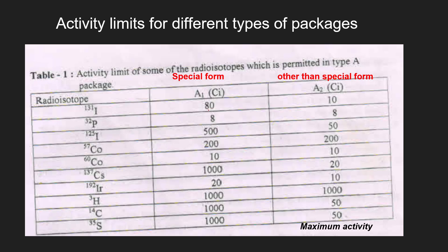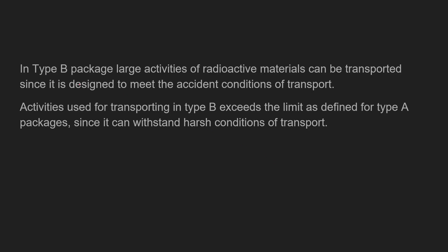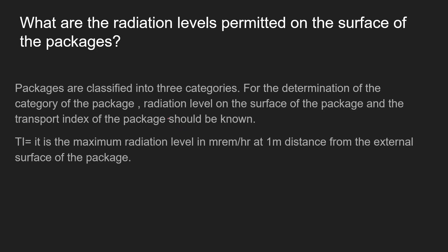The activity limits for Type A packages include, for example, Iodine-131: 80 TBq in special form and 10 TBq in other than special form (unsealed form). These limits apply for different radionuclides in special form and non-special form — that is the maximum activity loadable in a defined package. For Type B packages, large activities of radioactive material can be transported since Type B is designed to meet accident conditions of transport.